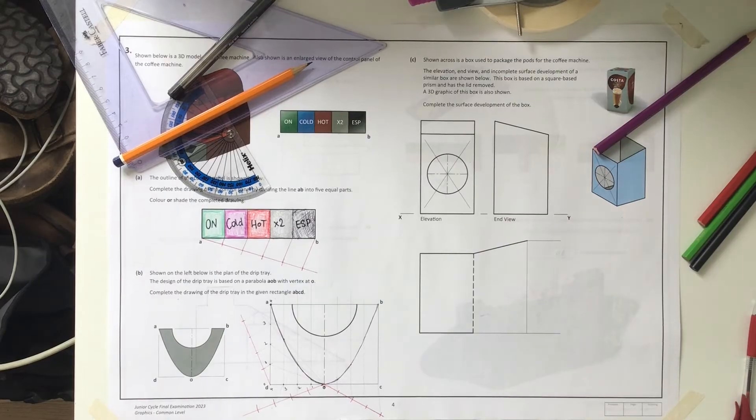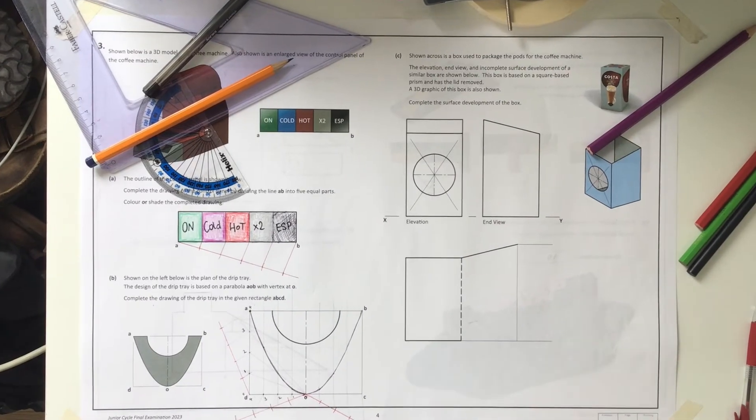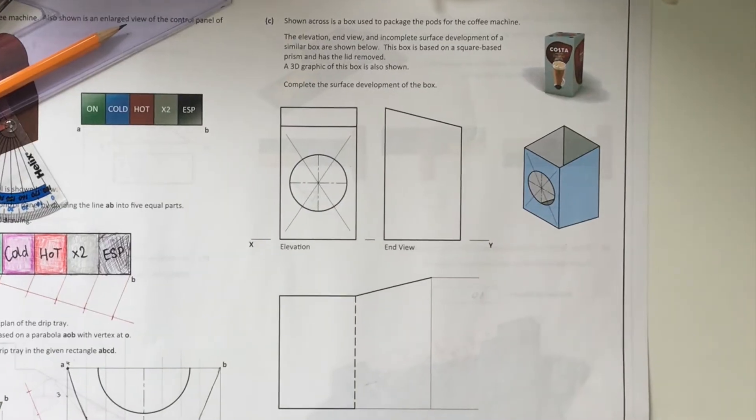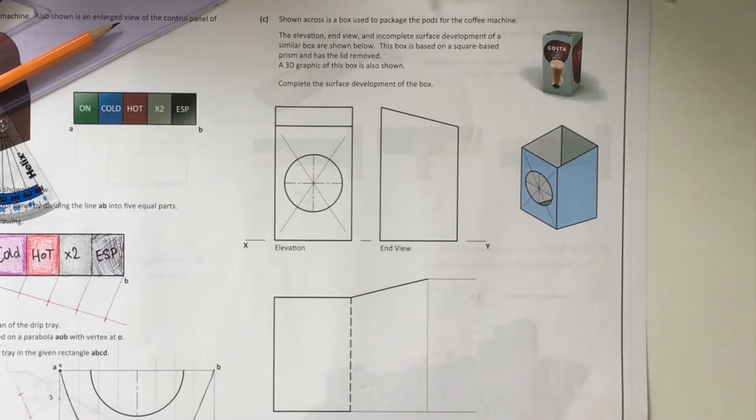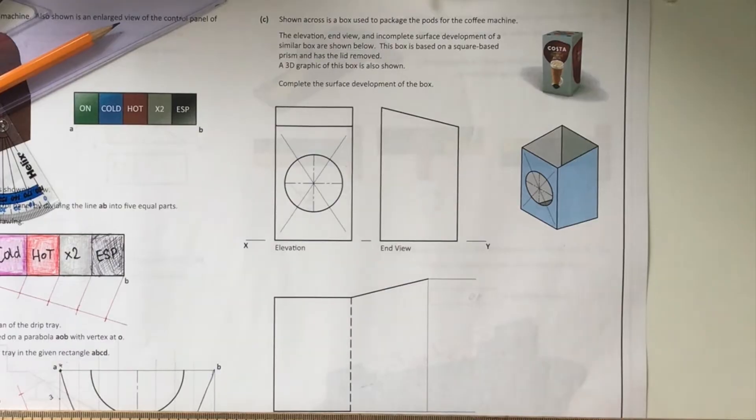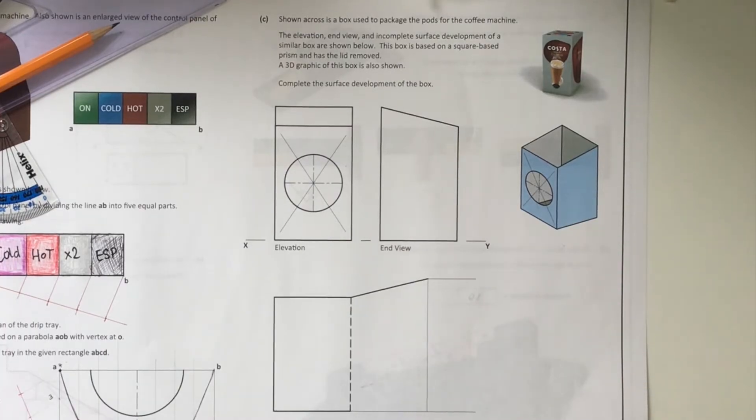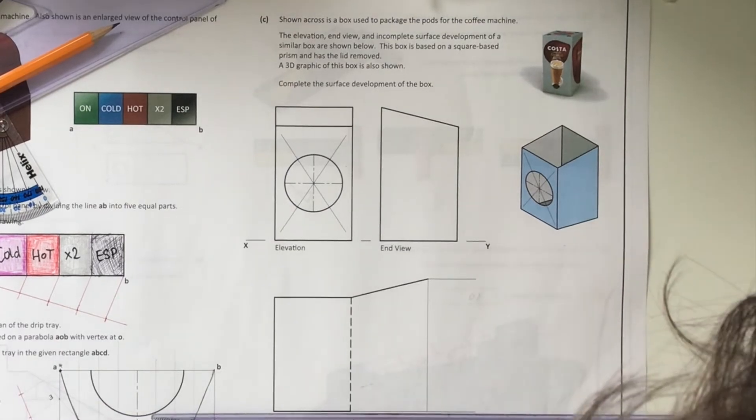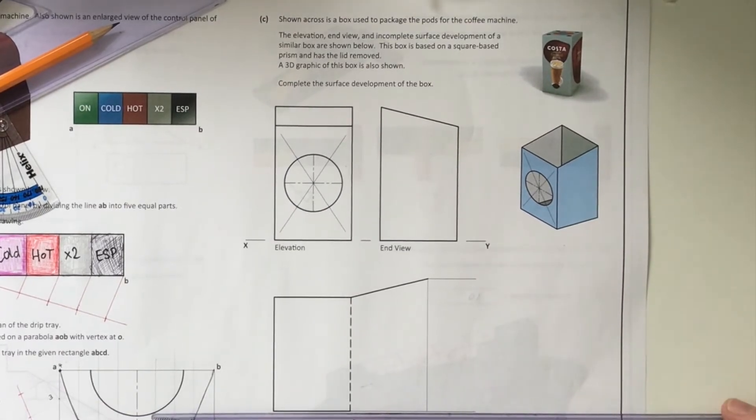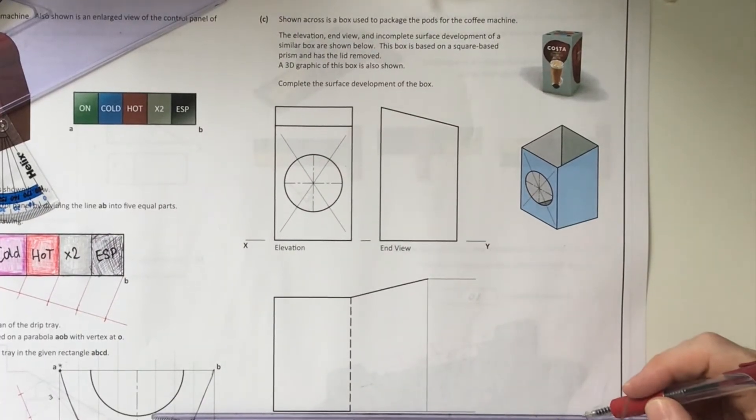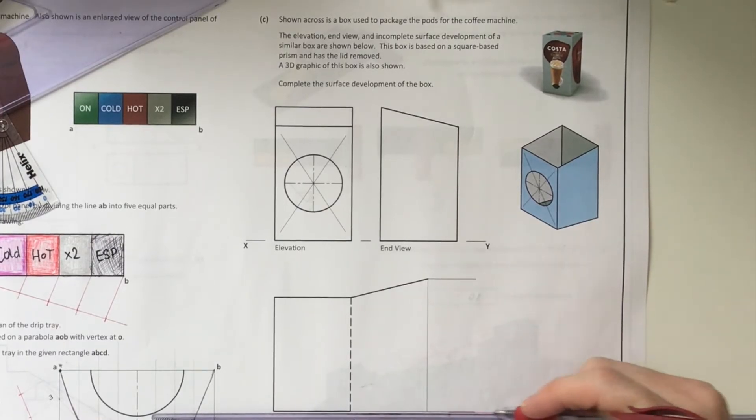We're on to the last question on this sheet, the last part of question three. This is a fairly soft development question, as development questions go, especially in comparison to the math box and other questions we've seen previously. They're asking you to complete a development of the given packaging box. This is kind of linked to that junior cert project that these junior certs would have sat that year.